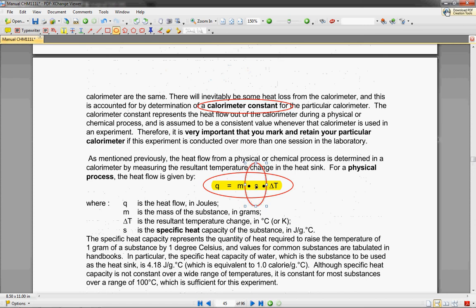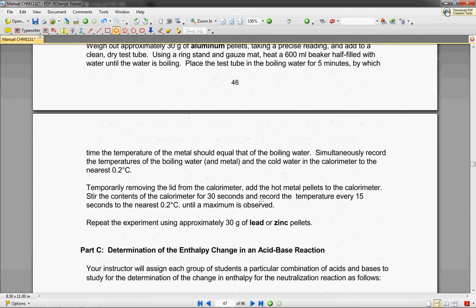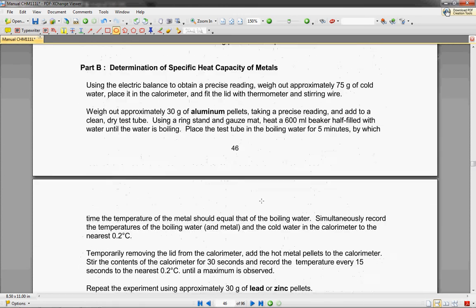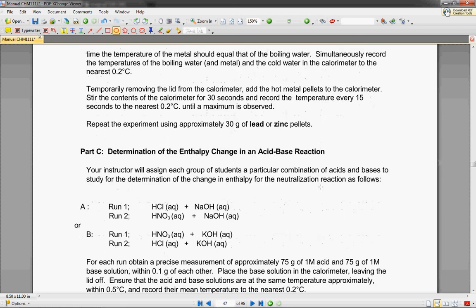If you remember our equation up here, if we have a very high specific heat, then our temperature change is going to be pretty high as well. So we're going to determine that for aluminum, and we are going to repeat it for lead or zinc pellets.